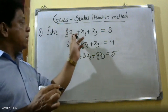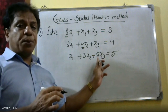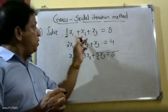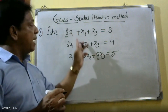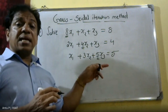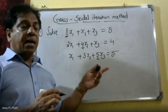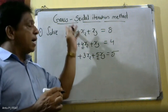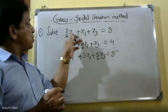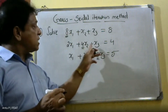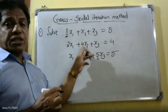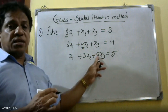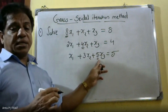Diagonal elements must be dominant — that is the key point. In this case, the equations are not diagonally dominant as given, so we interchange them. The first equation handles x1, the third equation handles x3, based on the coefficient diagram. That gives us the diagonally dominant arrangement.